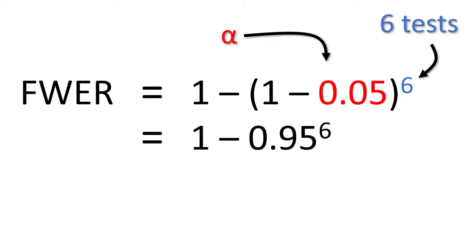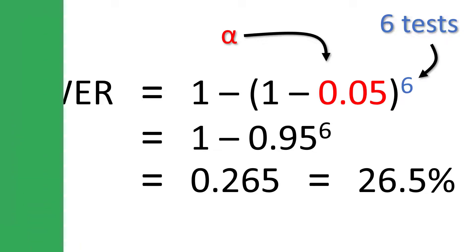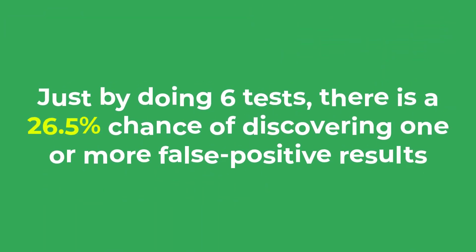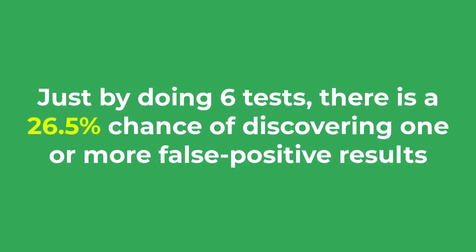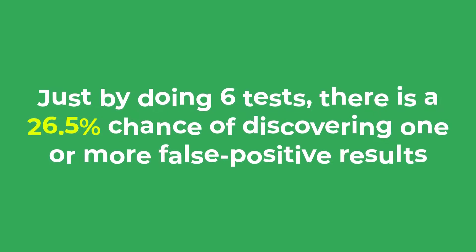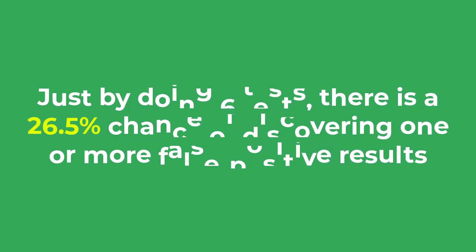Doing so will give a family-wise error rate of 0.265 or 26.5%. So just by doing 6 tests there is a 26.5% chance of discovering one or more false positive results. And that's just by performing a family of 6 tests.